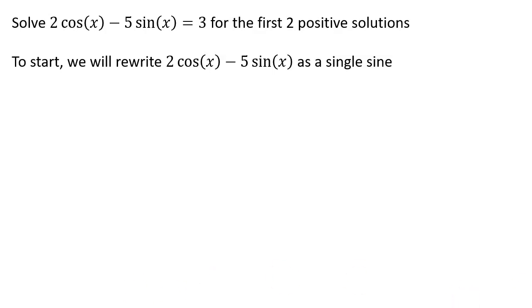So in order to solve this one, unfortunately there's no easy way to just rewrite this using the Pythagorean identities or tangent identity or anything like that. So the approach we need to take here is to rewrite the left-hand side of this equation, the 2 cosine x minus 5 sine x, as a single sine function.